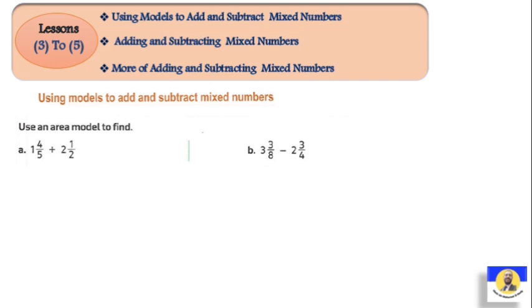In the models method, we might get a question with plus or minus. For example, if we have one and four over five. For the whole number one, and four over five means we have a shape divided into five parts - one, two, three, four, five - and we color four out of the five parts.